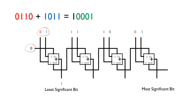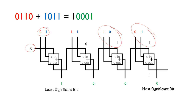With the first carry-in set to zero, zero and one generates a sum of one with no carry. Then one and one with carry-in zero gives a sum of zero and generates a carry that feeds into the next adder. That carry propagates through: zero plus zero plus carry gives zero with another carry, and finally those bits give zero with the final carry-out. Writing the results from most significant to least significant gives us the same answer as before, including the final carry-out.